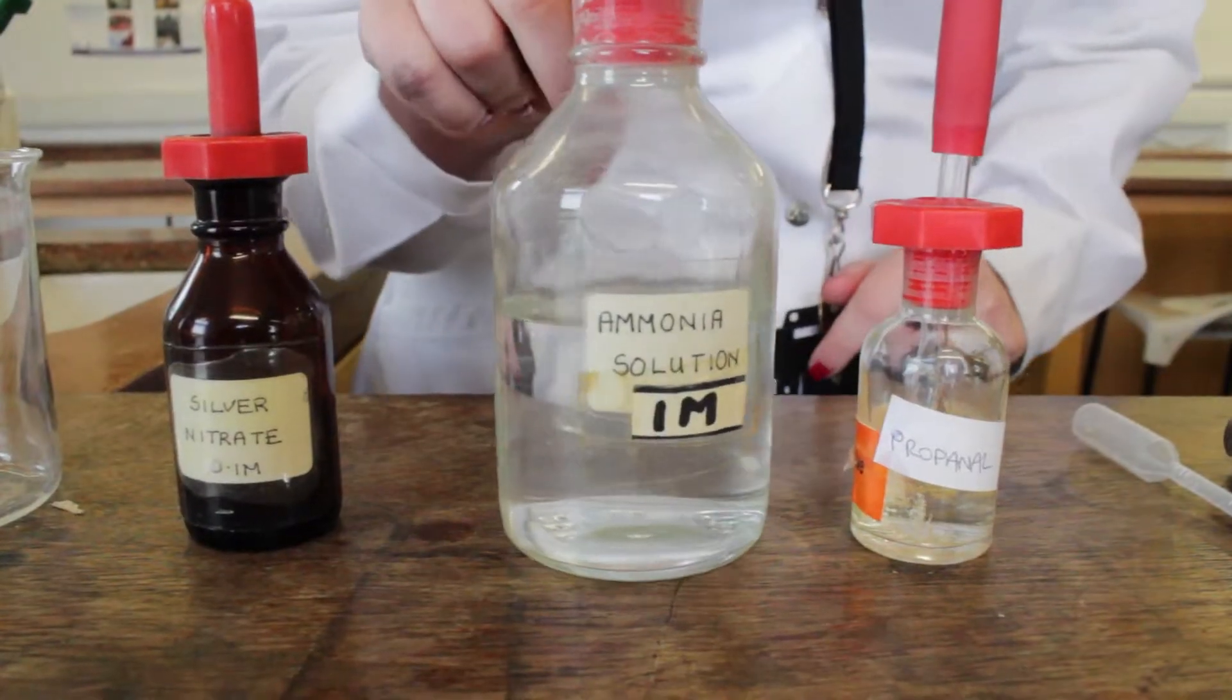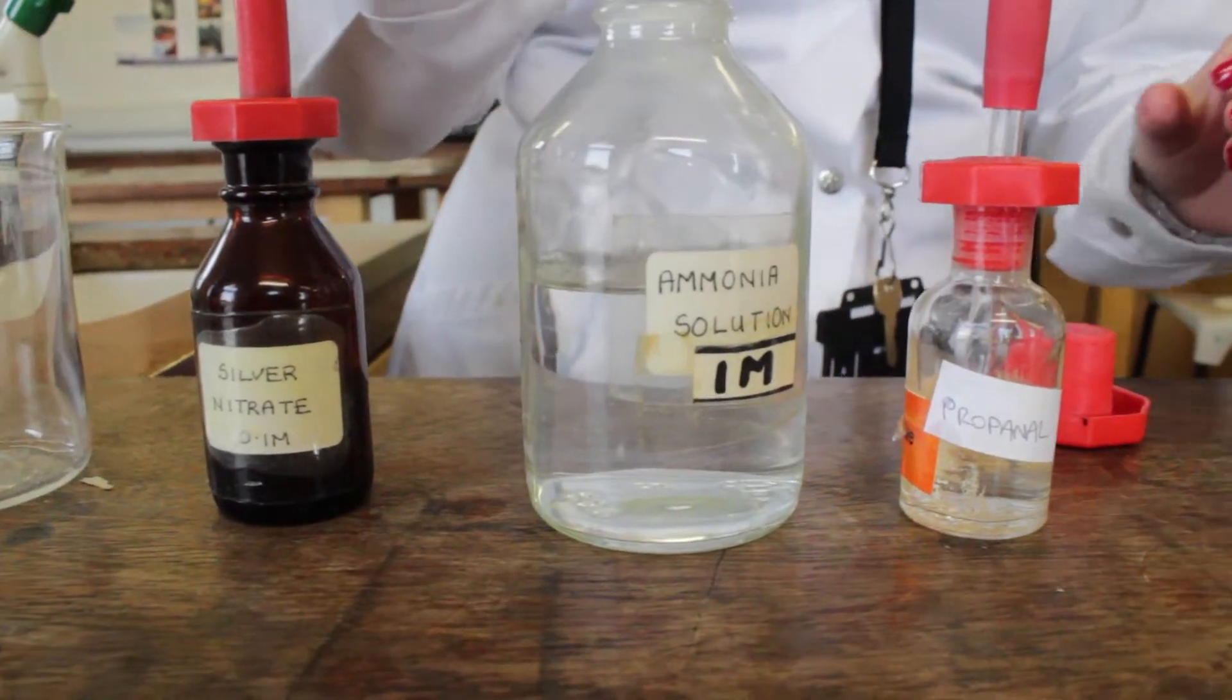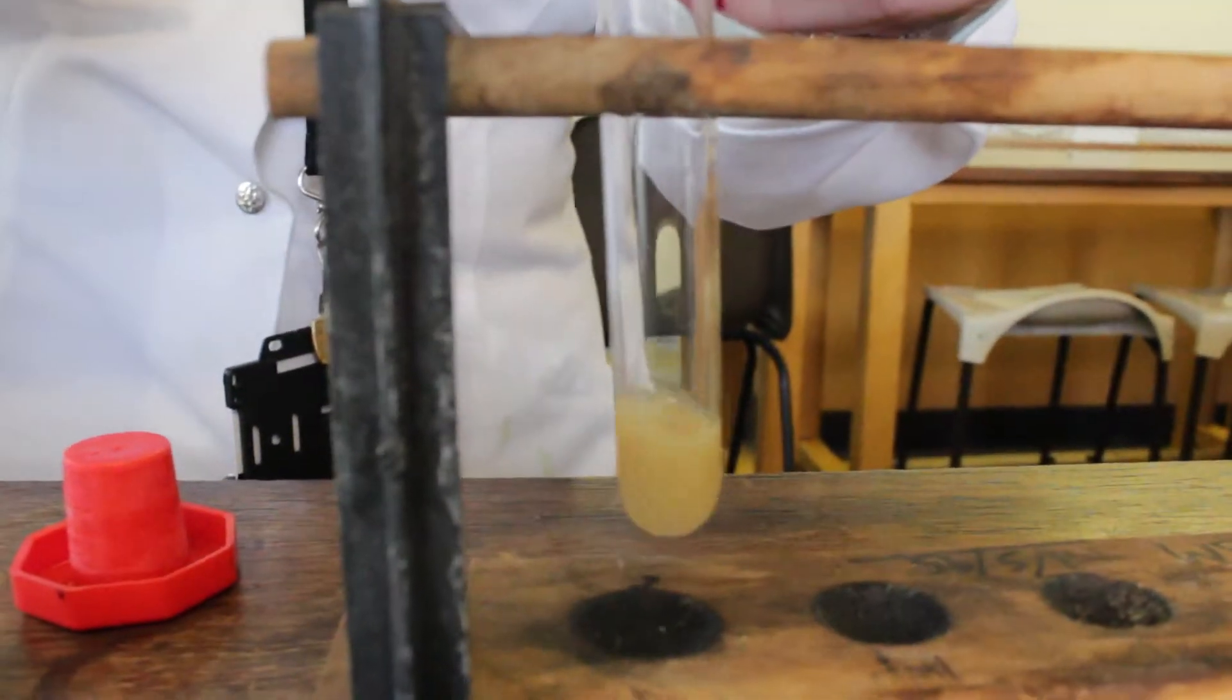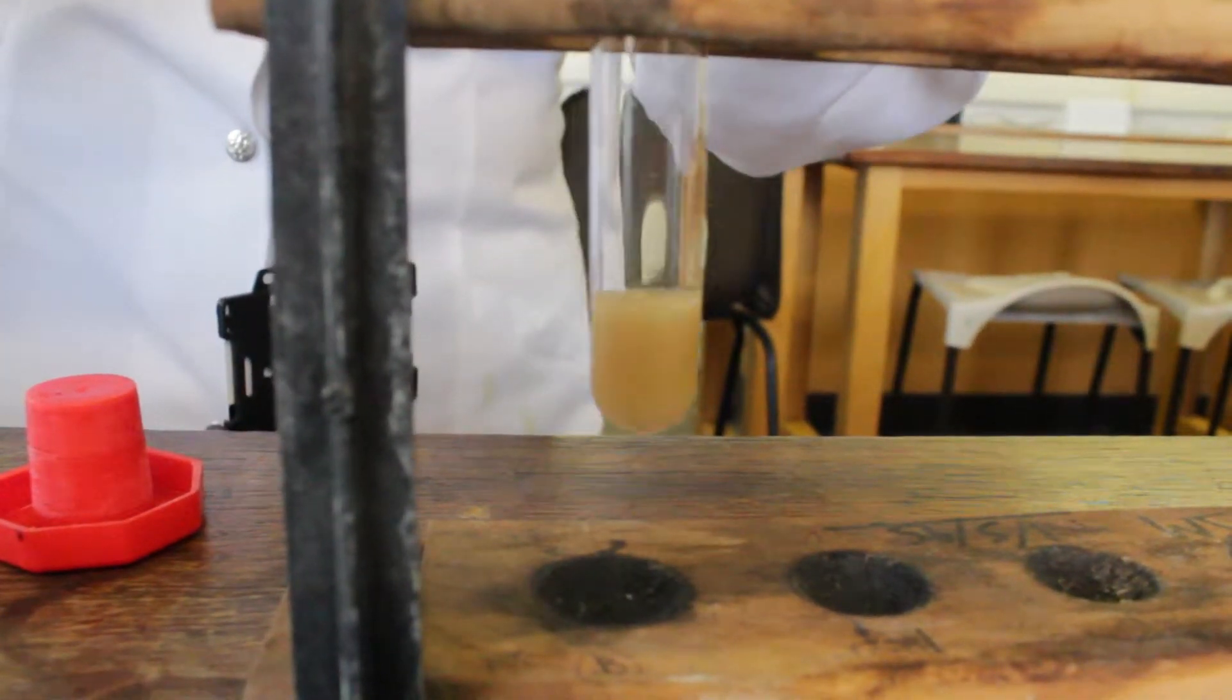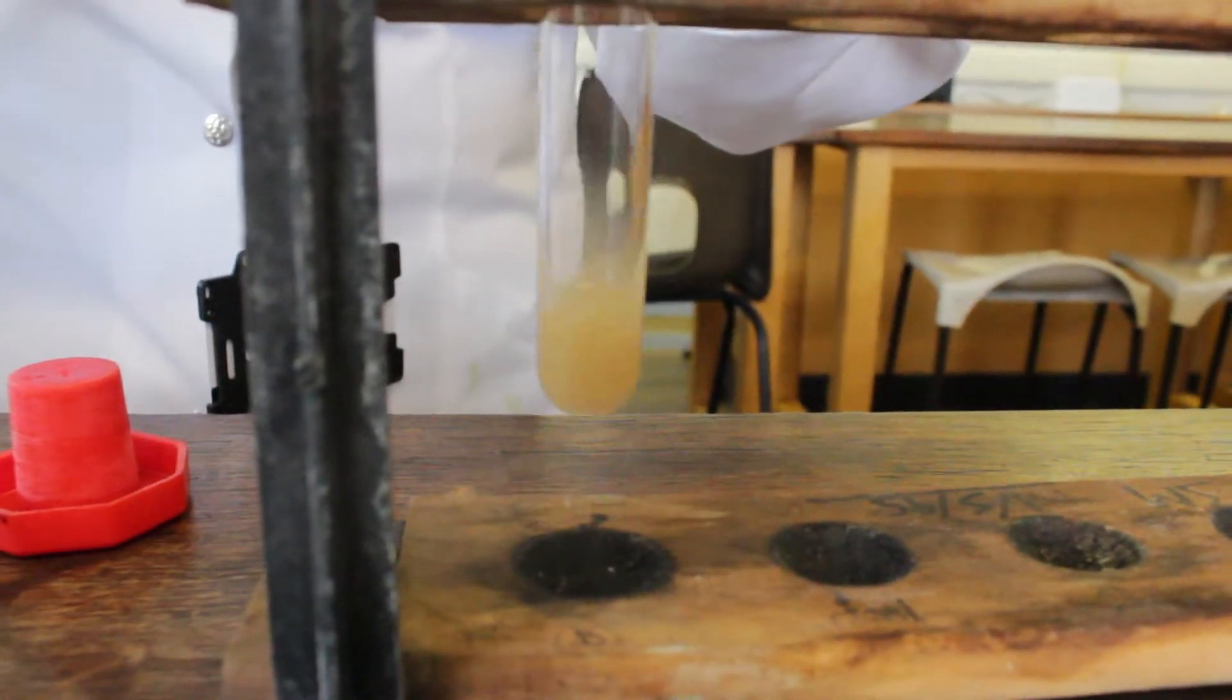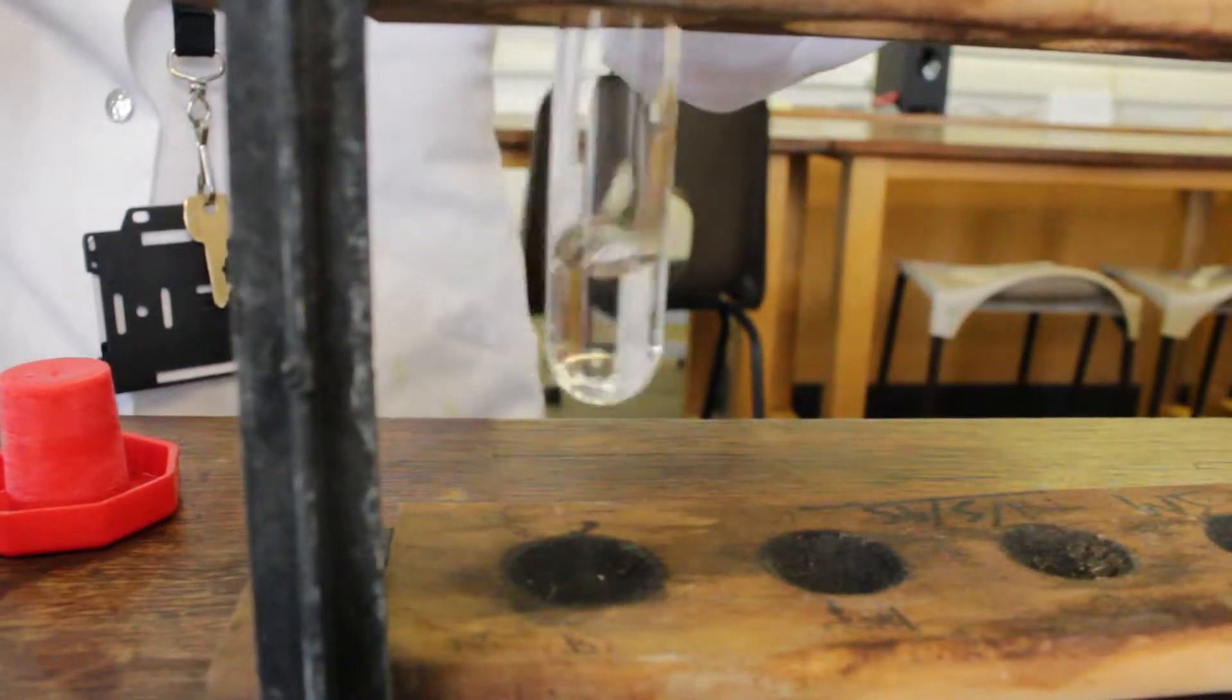We're now going to add the ammonia solution. It's important to add this drop by drop. As you add it drop by drop, give it a shake. You should see initially a precipitate of silver oxide forming. There we go and then it disappears.